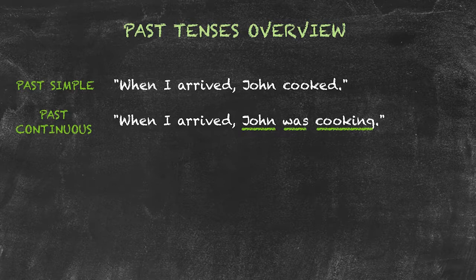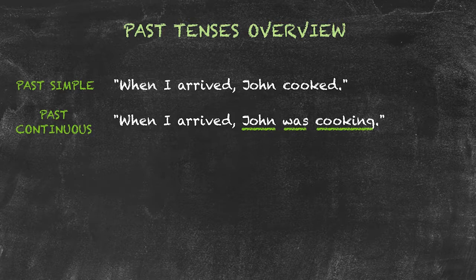The past continuous tense is used to describe an action that was in progress at a specific past time. The cooking was in progress at the time I arrived. This differs from the first example sentence, where I arrived first and then John cooked. In this example, the cooking had already started and was still in progress at the time I arrived.